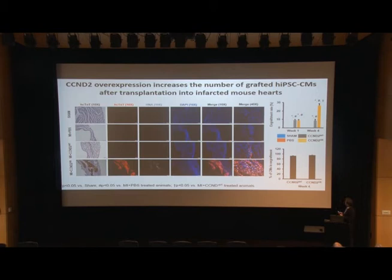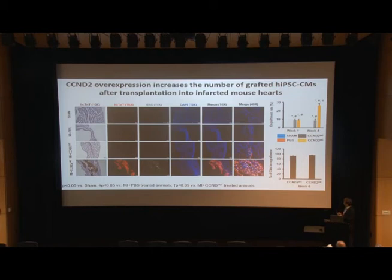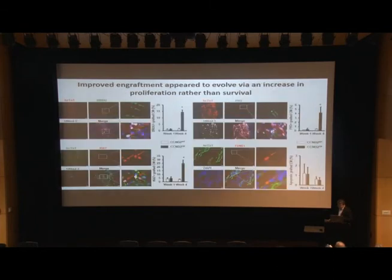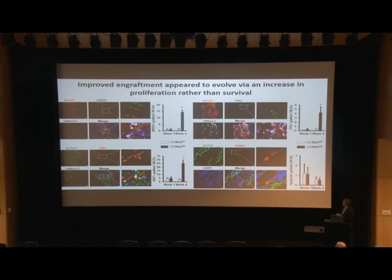We quantified the number of myocytes in the grafted area, since luciferase activity can be detected in both myocytes and non-myocytes. Even at four weeks after cell delivery, purity remained high — over 90% of the grafted cells were still myocytes. We then confirmed that the larger graft is a result of cell cycle activity driven by Cyclin D2, using multiple markers: BrdU for the G1/S phase, Ki67 as a broad cell cycle marker, and phosphohistone H3 for the M phase. All histology confirmed that at four weeks, Cyclin D2 cells displayed significantly higher cell cycle activity compared to grafted wild-type cells.